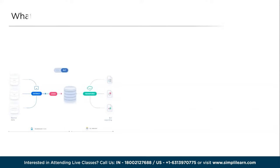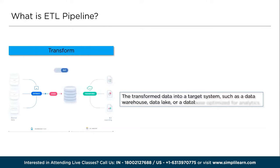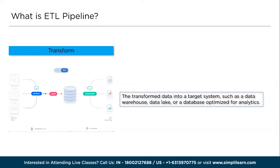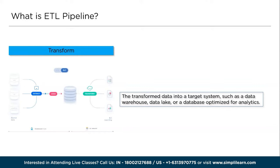Next is the transform phase. Once the data is extracted, it often requires significant cleaning, validation, and restructuring. The transformation phase ensures that the data is consistent, standardized, and ready for analysis. Transformations can include tasks such as data cleansing, filtering, aggregating, joining, or applying complex business rules. Tools like Apache Spark, Talend, or Python libraries like Pandas are commonly used for these transformations.